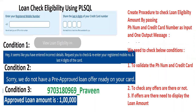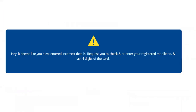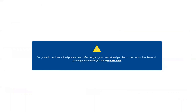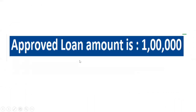If details are incorrect, we display a message like 'Entered incorrect details' — that's the basic validation. We also need to check whether a loan amount is there. If there's no pre-approved loan on this credit card, we display that message. If there is a pre-approved loan, we display the approval amount. These are the conditions we need to handle.